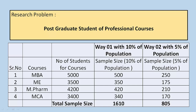In the second way, we take 5% of the population. For MBA, 5% of 5000 students is 250. For ME, 5% of 3500 is 175. For MFARM it is 210 and for MCA it is 170. Therefore the total sample size after considering 5% of the total population is 805.